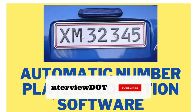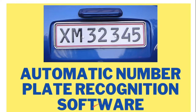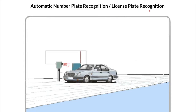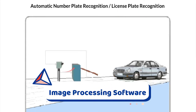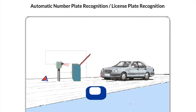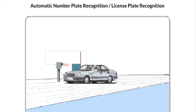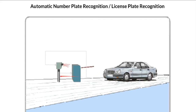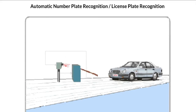In this video I'm going to talk about how automatic number plate recognition software works. LPR — license plate recognition — is image processing software used to identify vehicles by their license plate. This technology is used in various security and traffic applications.